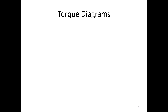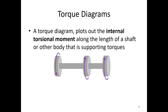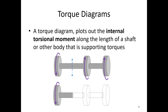Next let's talk about torque diagrams. A torque diagram plots out the internal torsional moment along the length of a shaft or other body that's supporting torques. Usually we do this with a shaft that has lots of gears on it — one input and two outputs in this case. If I make a cut at cross-section AA using the traditional method I'd get some internal torque in the shaft. If I want a second cross-section at B, I'd need to do a second diagram — or I can just set up my torsion diagram.